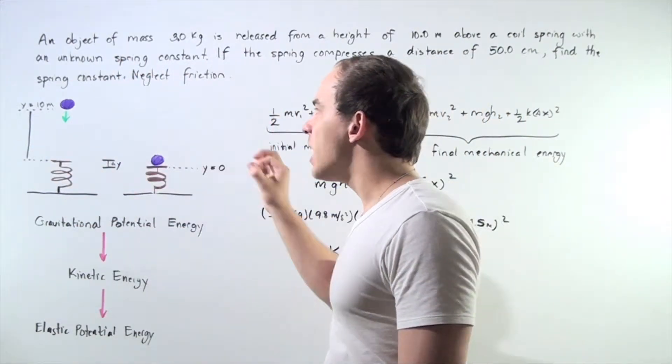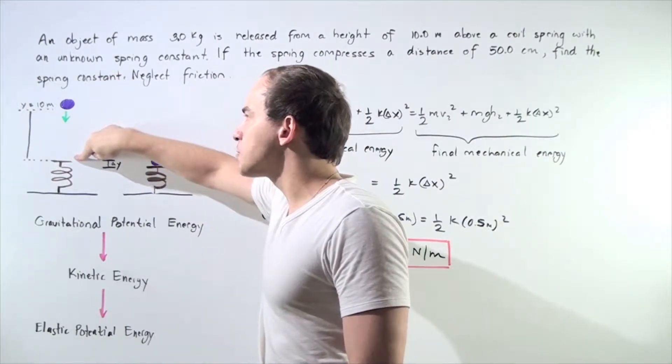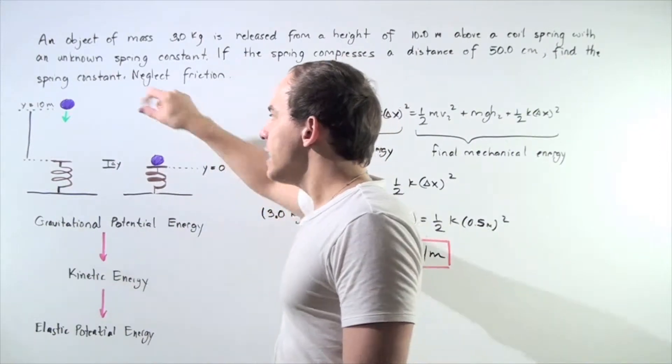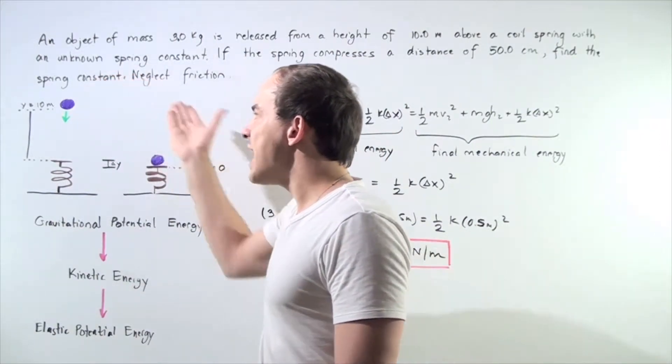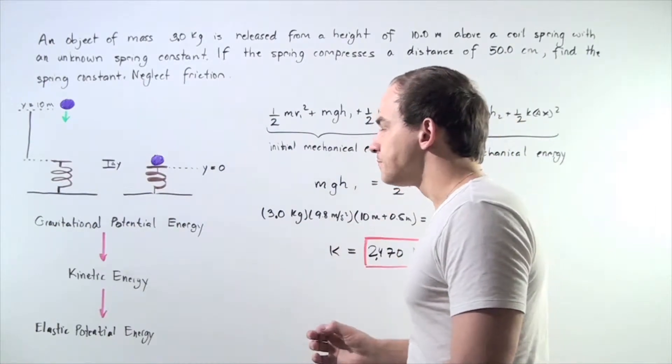Initially our object is stationary at a position of 10 meters above our spring. So initially, the only type of energy we have is the gravitational potential energy.